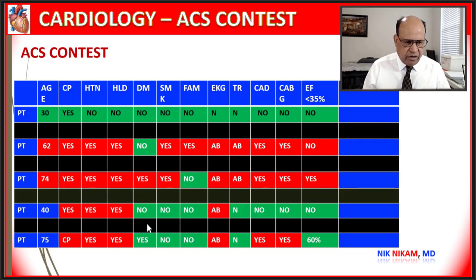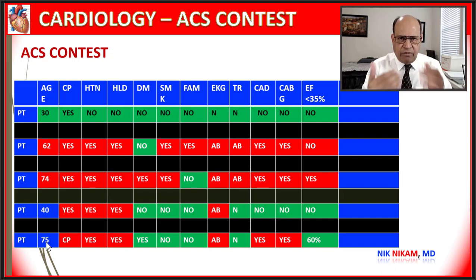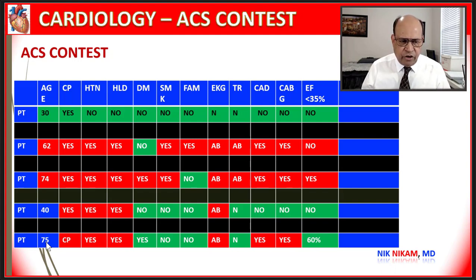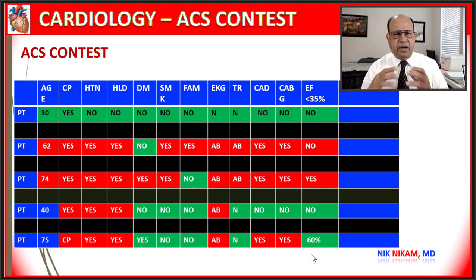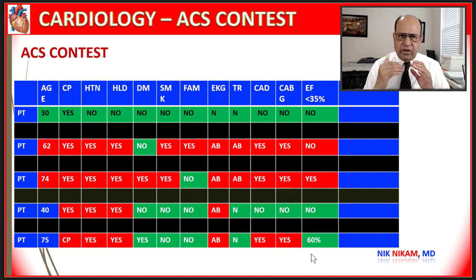Let's look at a 75-year-old patient — remember, age itself is an independent risk factor for acute coronary syndrome. This patient has chest pain, hypertension, hyperlipidemia, diabetes, abnormal EKG, normal troponins, and a history of bypass surgery with preserved left ventricular function. Again, we are dealing with someone who is a high risk patient. Based on these assessments, we determine what kind of tests to do to pinpoint whether the pain is coming from the heart.